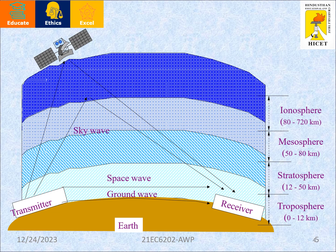This is the general structure of propagation modes. From the transmitter to the receiver, at the earth's surface, from the earth's surface to 12 km distance is the troposphere region. From 12 km to 50 km distance is the stratosphere region. From 50 km to 80 km distance is the mesosphere region. From 80 km to 720 km is the ionosphere region.